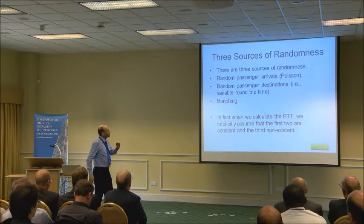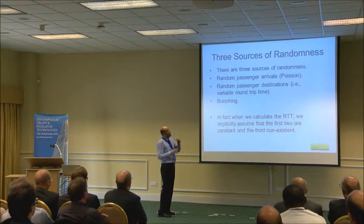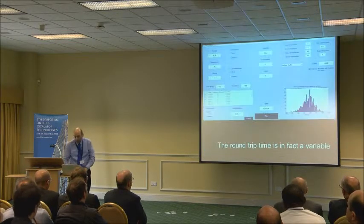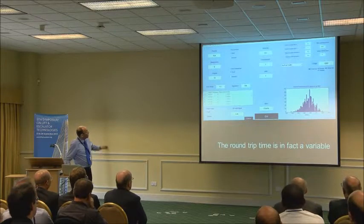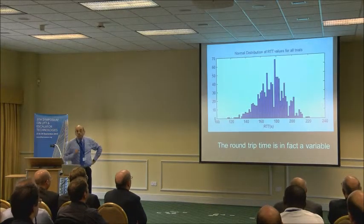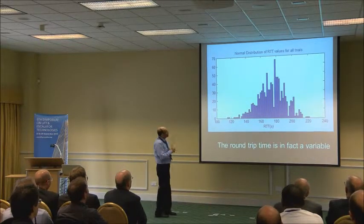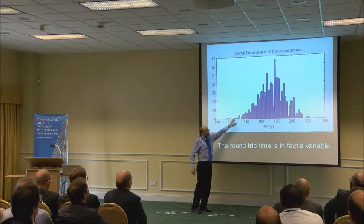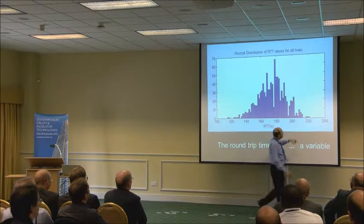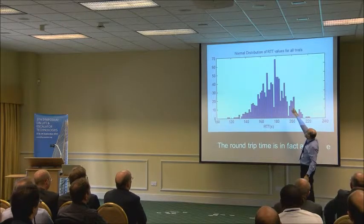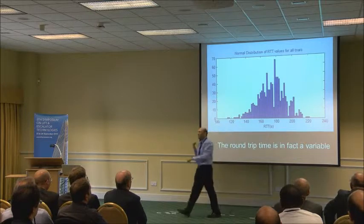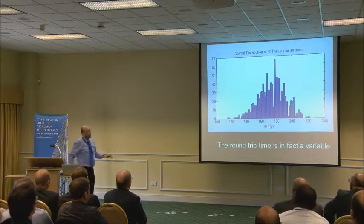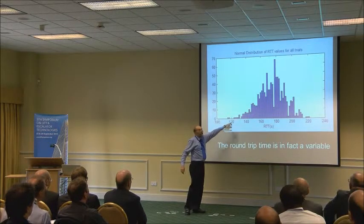When we do the calculation, we assume that passengers arrive uniformly, the round trip time is constant, and bunching is non-existent. This is an example of software that calculates the round trip time using Monte Carlo simulation. This is a plot of the frequency of the values of the round trip time — it's saying the round trip time can go as low as 120 seconds, but not very frequently, and as high as 220 seconds, but not very frequently. It spends most of its time around 180 seconds. That's the real characteristic: it's not constant. What you've calculated is an average of all of those. The round trip time is varying from as low as 120 to as high as 220 seconds.